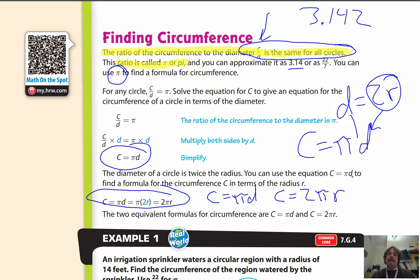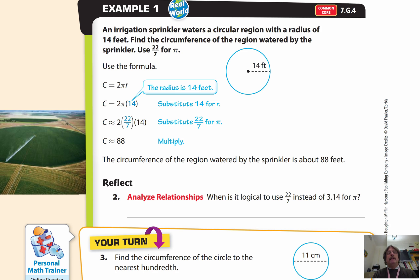Circumference equals pi D, so pi times the diameter, or circumference equals 2 times pi times the radius. So depending upon which information you're given, you can use any particular formula. So we take a look here at example one, it says an irrigation sprinkler waters a circular region with a radius of 14 feet. So we have radius, we go and, you know, we highlight our important information. Find the circumference of the region watered by the sprinkler. You can use 22 over 7 for pi, you can use the pi key.